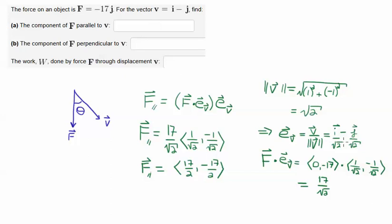And then J dot J will give us the one, so F dot e_V is just simply zero times 1 over root 2 minus 17 times minus 1 over root 2, and so we get 17 over root 2.